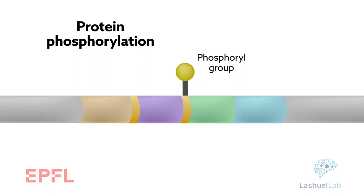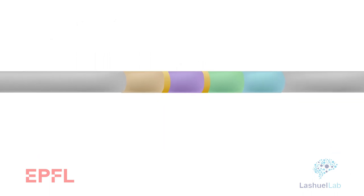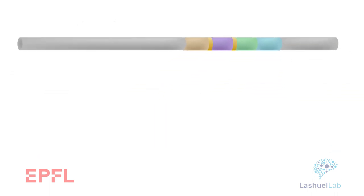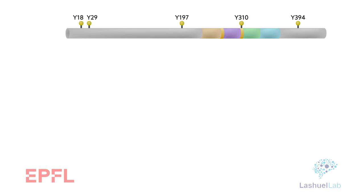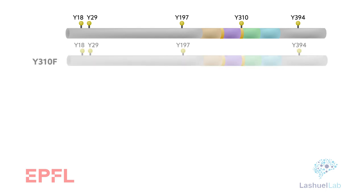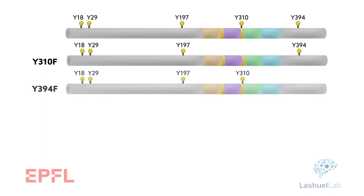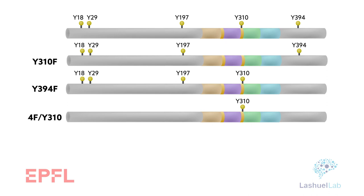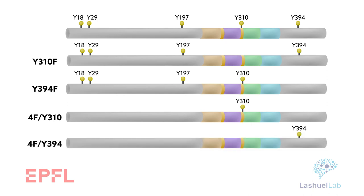Through a combination of highly precise mutation and enzyme manipulation, the team decorated each site with phosphogroups in five distinct patterns: phosphorylation at all five tyrosine sites, at all sites except tyrosine-310 or 394, and at only one site, tyrosine-310 or 394.